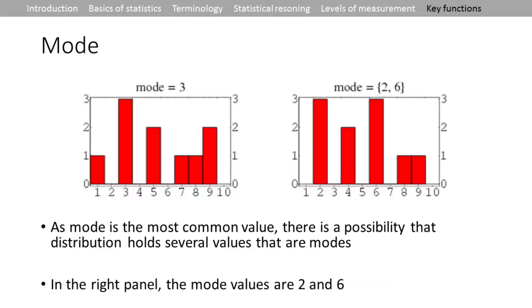The figure also illustrates that you can have two mode values — a bimodal distribution. In the left panel, the mode is the number 3 because it has the highest frequency. In the right panel there are two modes — values 2 and 6 — which share the same frequency. Sometimes mode is useful when you're looking for peaks in a distribution.